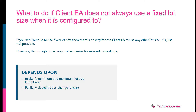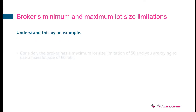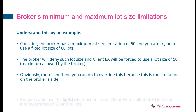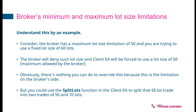It depends upon a couple of things: it could be broker minimum and maximum lot size limitations, or it could be partially closed trades and changed lot size. The first thing is that brokers have minimum and maximum lot size limitations. Consider the broker has a maximum lot size limitation of 50 and you're trying to use a fixed lot size of 60 lots. The broker will obviously deny such a lot size and ClientA will be forced to use just 50 lots, which is the maximum allowed by the broker. There's nothing you can do to override this because this is a limitation on the broker side.